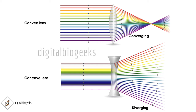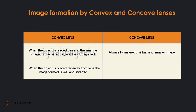The convex lens converges light at a point. On the other hand, we cannot burn paper using a concave lens because the concave lens always diverges the light rays that fall on it, so heat cannot accumulate at one point. Hence the concave lens is also called a diverging lens.